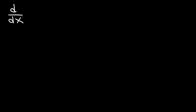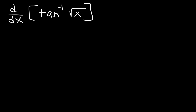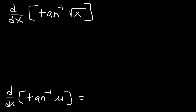Here's another problem: what is the derivative of arc tangent of the square root of x? Check your textbook for the formula, but here it is for arc tangent. The derivative of arc tan of u is u prime divided by 1 plus u squared.